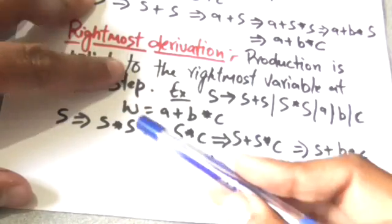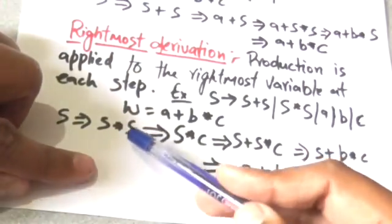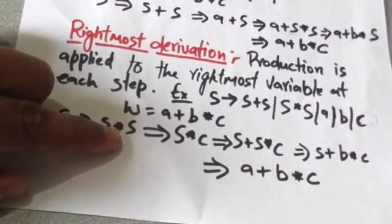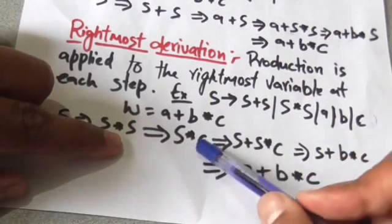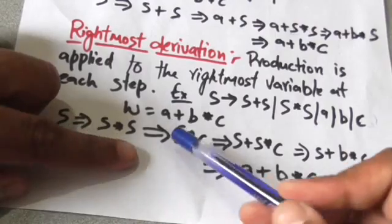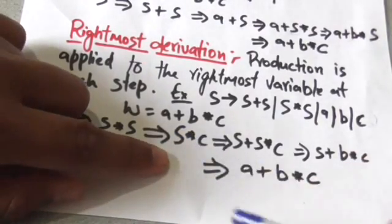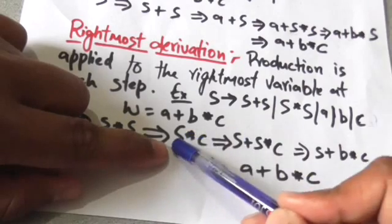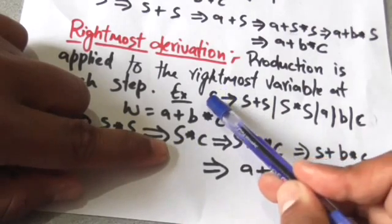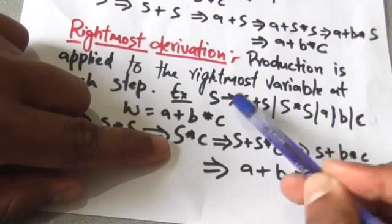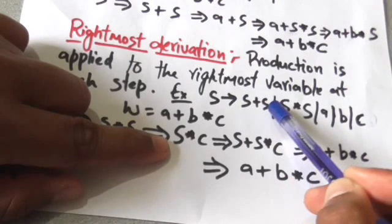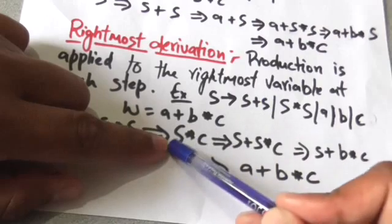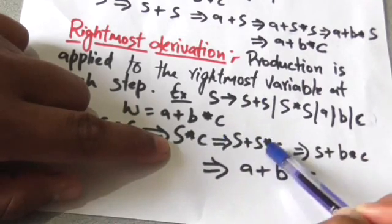Since this is the rightmost derivation, I have applied the production rule to the rightmost S. I have applied the production S derives c, so this S is replaced by c. Now in this expression, I have applied the production rule S derives S plus S, so this S is replaced by S plus S.